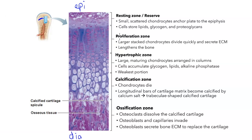In the second zone, which is the proliferation zone, the chondrocytes have become larger and they're stacked in vertical columns. They secrete extracellular matrix, and this actually serves to lengthen the bone. As the cells divide, they expand, and the resting zone up here becomes further and further away from the diaphysis down here.